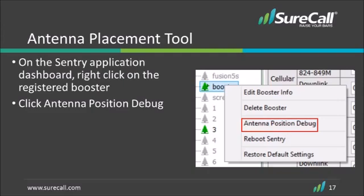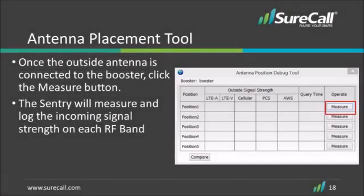On the Sentry application dashboard, right-click on the registered booster and click Antenna Position Debug. Once the outside antenna is connected to the booster, click the Measure button. The Sentry will measure and log the incoming signal strength on each RF band. You will also see what time of the day this reading was taken.